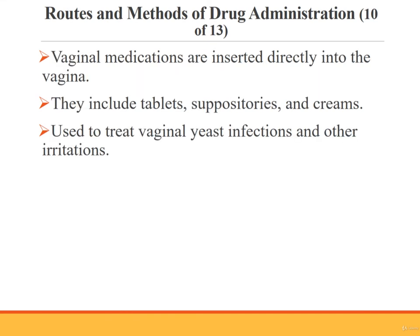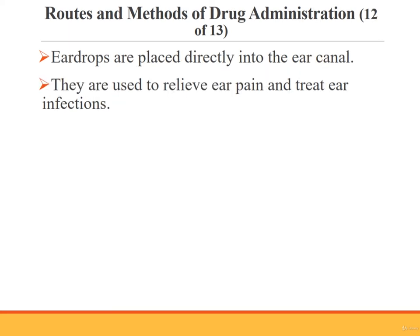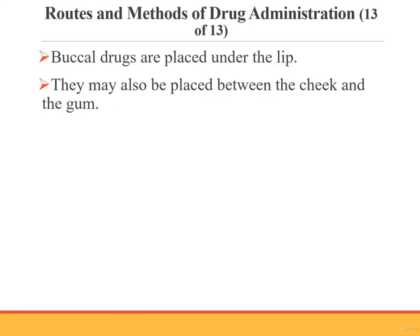Vaginal medications are inserted directly into the vagina and include tablets, suppositories, and creams, used to treat vaginal yeast infections and other irritations. Eyedrops are used during eye examinations to dilate the pupil, to control eye pressure and glaucoma, and to treat infections. Eardrops are placed directly into the ear canal to treat infections or relieve ear pain. Buccal drugs are placed under the lip or between the cheek and gum.